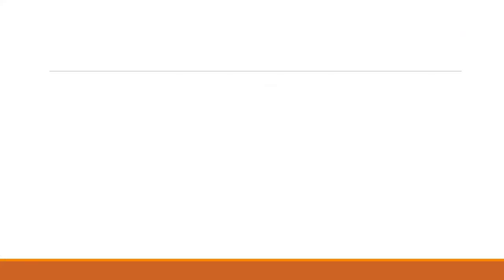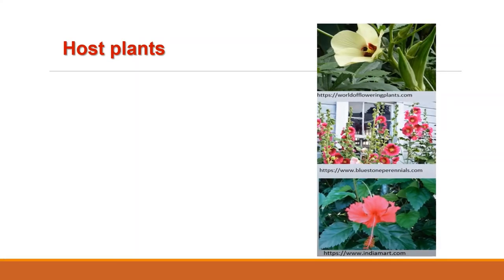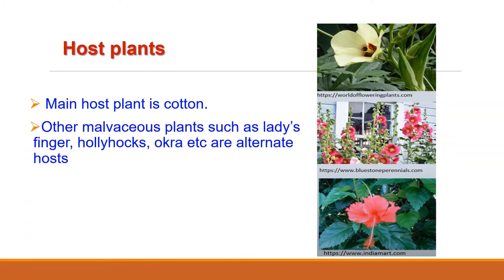As far as host plants are concerned, the main host plant is cotton. But it also infects other malvaceous plants like okra, that is lady's finger, hollyhocks, and hibiscus. Although it is a major pest of cotton, it can also infect other plants of the Malvaceae family and survive on them, so they act as alternative hosts.